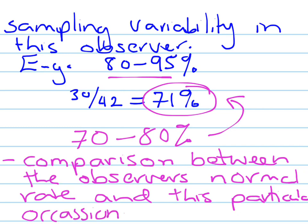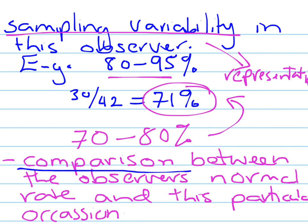We want to know: is that data representative of that observer? How much variation would be normal for that particular observer? Doing a simulation will help us gather information about the sampling variability and enable us to make a better comparison between that 71% and what would normally be expected.